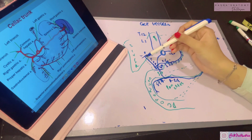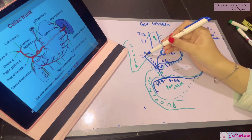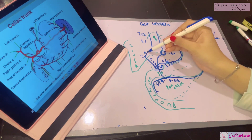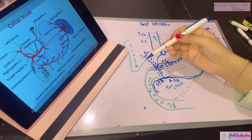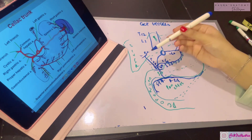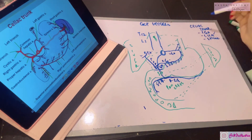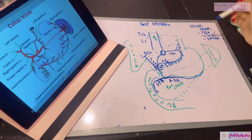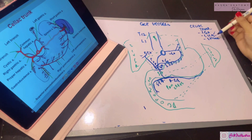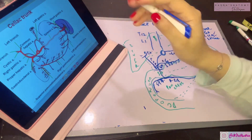Finally, once the proper hepatic artery enters the porta hepatis, through its right hepatic branch it gives the cystic artery, which supplies the gallbladder. So the cystic artery is another important branch related to the common hepatic artery.